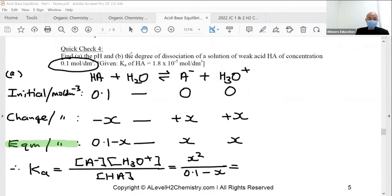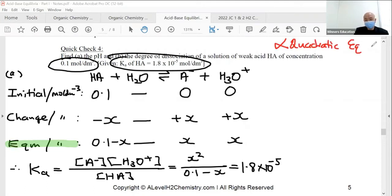Which is this value. It must be given the Ka, 1.8 times 10 minus 5. So you have an equation, a mathematical equation that can solve X using quadratic. But you should also know that in H2 level, we don't do quadratic. We skip quadratic equation.